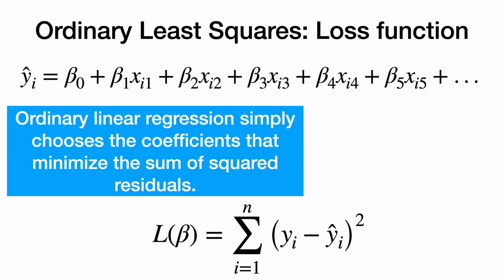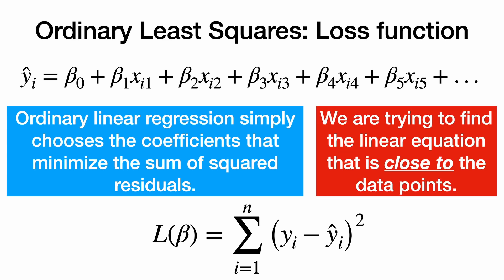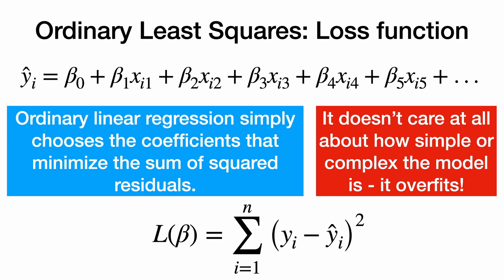Well, in ordinary least squares, the only thing we care about is choosing the coefficients that minimize the sum of the squared residuals. We are trying to find the linear equation that is close to the data points. And it doesn't matter at all how simple or complex the model is. It's going to make it really complex and it's going to overfit.